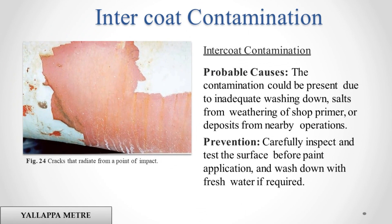Intercoat Contamination. Probable causes: the contamination could be present due to inadequate washing down, salts from weathering of shop primer, or deposits from nearby operations. Prevention: carefully inspect and test the surface before paint application, and wash down with fresh water if required.